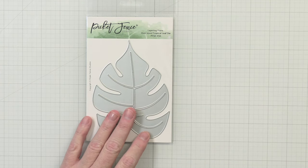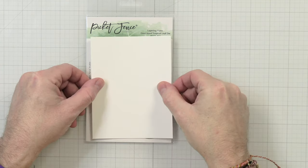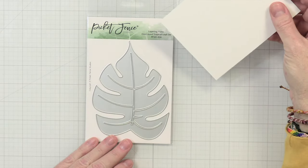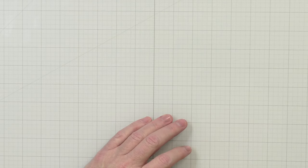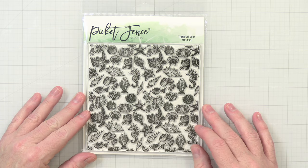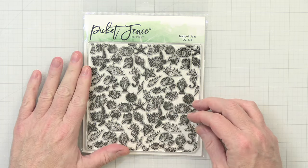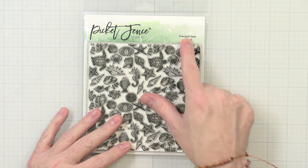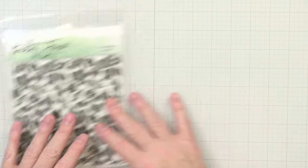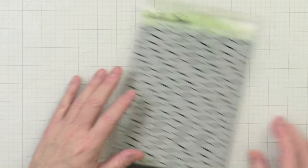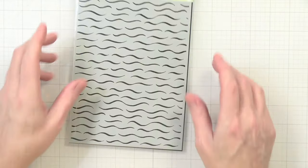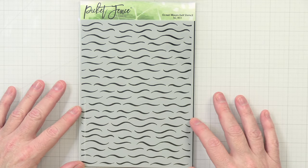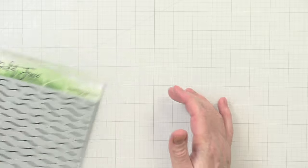Alright, up next we have a six by six stamp set. It looks really great. All these individual pieces, we have seashells, fish, starfish, turtles, all kinds of things here. Looks great, it's called Tranquil Seas, really pretty. And then we do have a stencil here. This is called Ocean Waves, really great stencil, six by eight, so you can get different size cards here. Really great stencil.